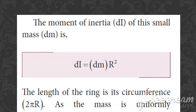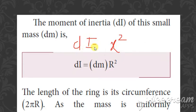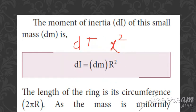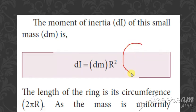The first formula we consider is dI = dm·R². Previously, for the rod, we used dI = dm·x²; here, instead of x², we write R², since every point on the ring is at a constant distance R from the center. The length of the ring along its circumference is 2πR.